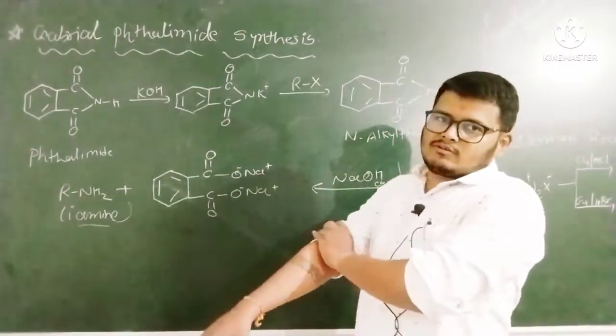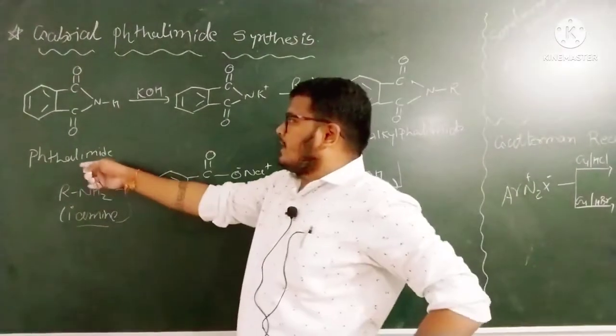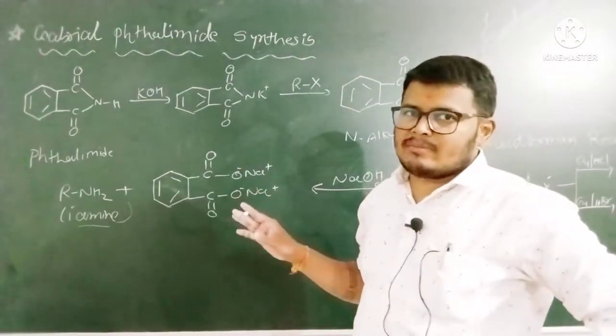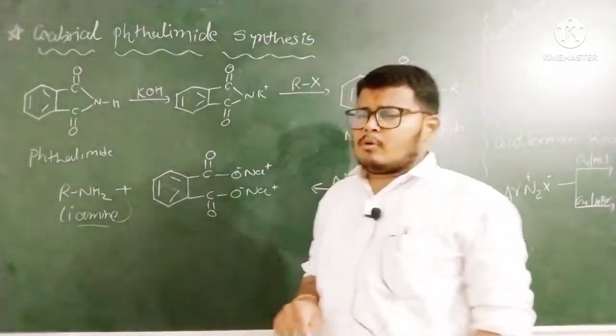That amines. It is an important question. So here phthalimide is linked with ethanolic potassium. That means we can say alcoholic potassium.